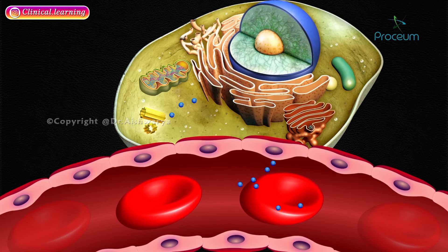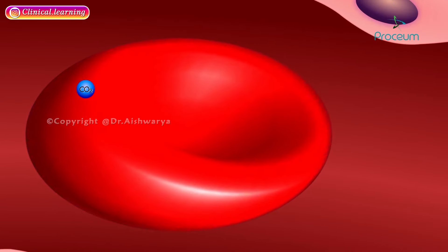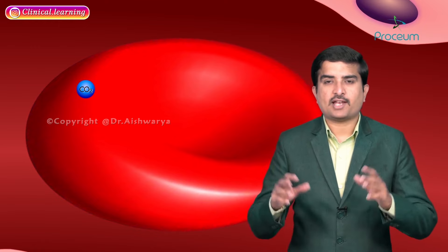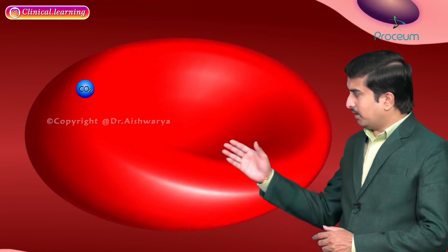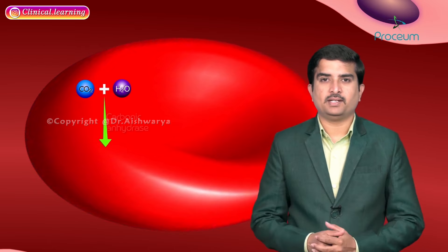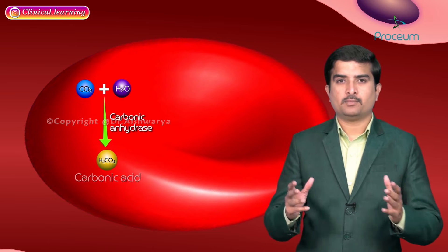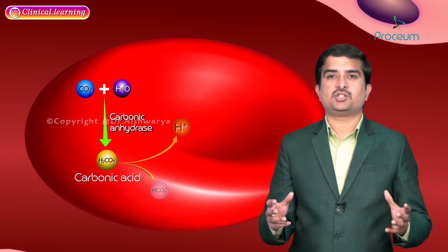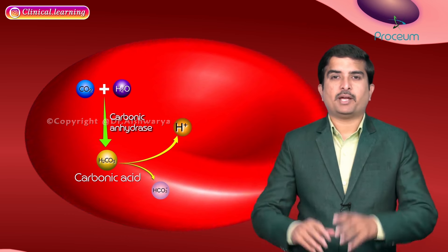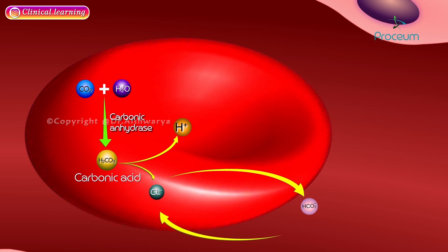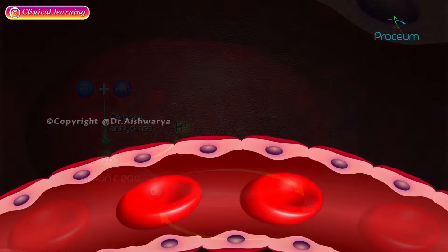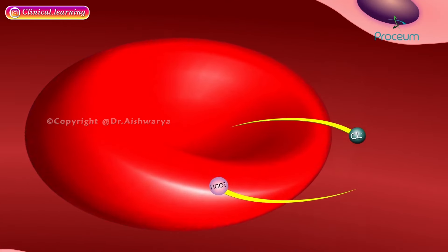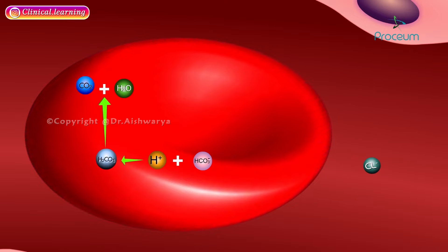About 65–70% of carbon dioxide transportation is in bicarbonate form. Carbonic anhydrase is an enzyme present abundantly in the RBCs that catalyzes the hydration of carbon dioxide to form carbonic acid. This carbonic acid is a highly unstable compound that dissociates into bicarbonate and hydrogen ions. The bicarbonate is then exchanged for chloride ions across the RBC membrane to maintain charge balance — this counter transport is termed the chloride shift — and the bicarbonate travels through the venous blood to the pulmonary capillaries.